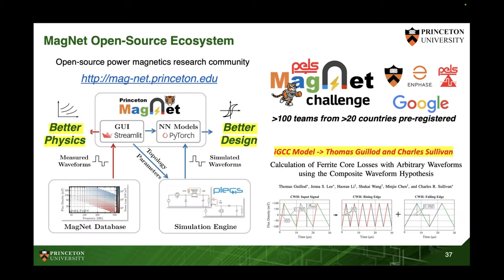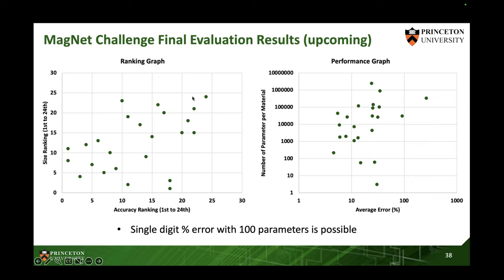Ultimately, we want to build an ecosystem. We find it's not enough for just our one team working on it — we hope the entire community can join us. That's why we launched the Princeton Magnet Project and MagNet Challenge. On one side, we try to understand better physics; on the other side, we hope to lead to better design. The MagNet Challenge attracted over 100 interested teams, 40 registered, 25 participated in qualification, and 24 teams are in the final evaluation. We're evaluating the results and will reach out very soon to select the winner in the coming few weeks. The best team is reaching about single-digit error in core loss prediction with about 100 parameters — the 2023 state of the art.